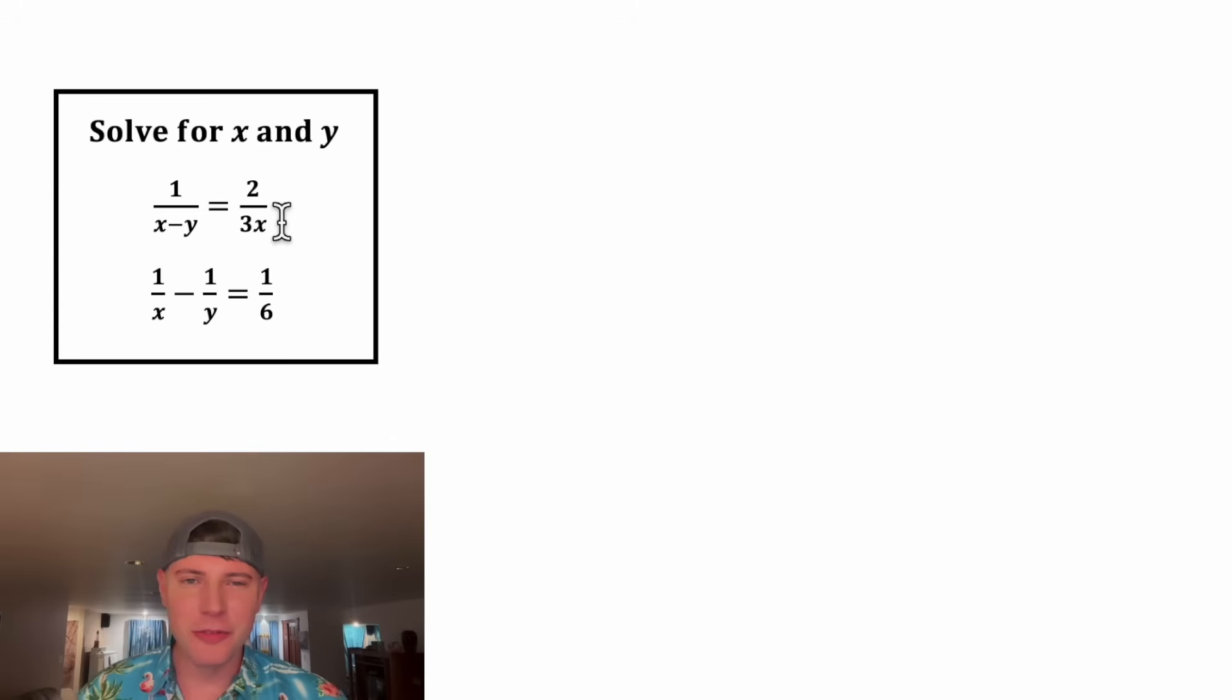Hey guys, this looks like a fun one. It says solve for x and y. We're given 1 over x minus y equals 2 over 3x, and 1 over x minus 1 over y equals 1 sixth. This is called a system of equations with two separate equations and two different variables, and our goal is to solve for each of those variables.